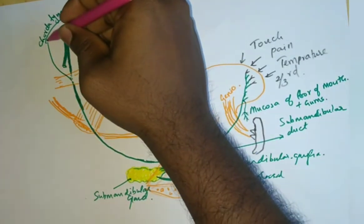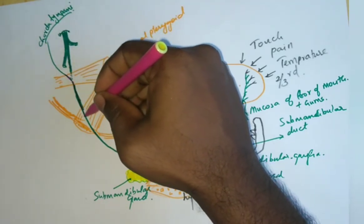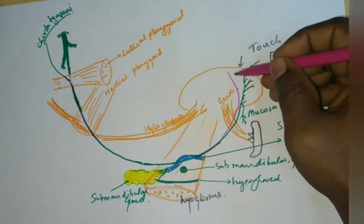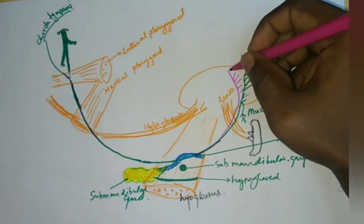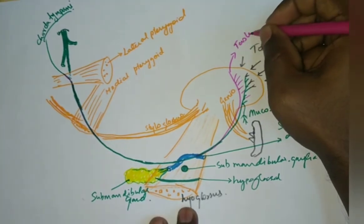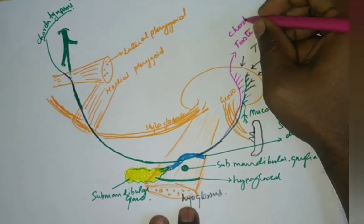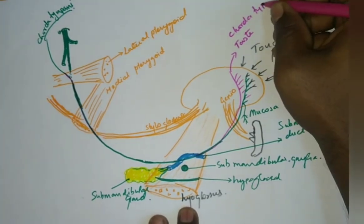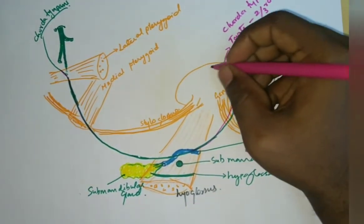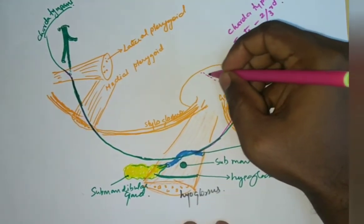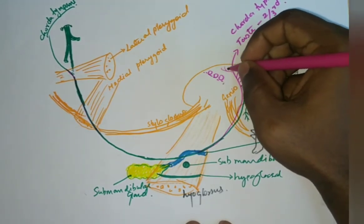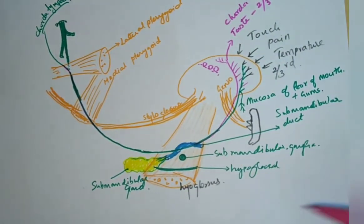The fibers coming from the chorda tympani travel along the lingual nerve and carry the taste sensation from the anterior two-thirds of the tongue. The chorda tympani carries taste from the anterior two-thirds of the tongue, except the circumvallate papillae.